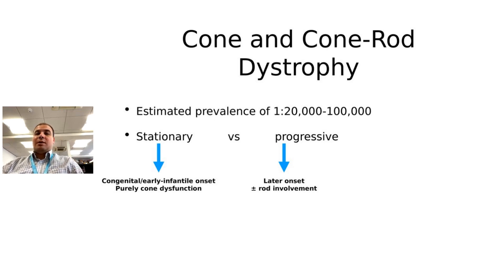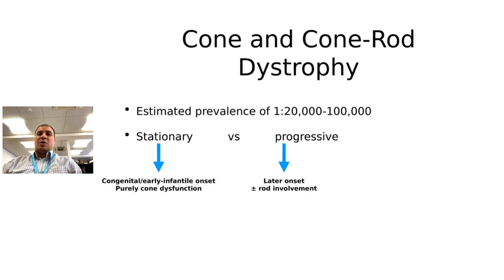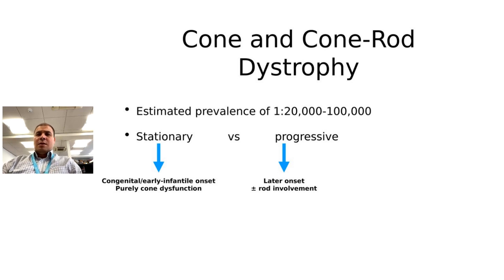If we think of inherited retinal diseases as an umbrella term, we get cone and cone-rod dystrophies. These are diseases that affect the light-sensitive cells in our eyes. In terms of commonality, it's not as common as the big group, because it's a subgroup. The estimated prevalence is one in 20,000 to 100,000 in the population. This can be divided into stationary and progressive.